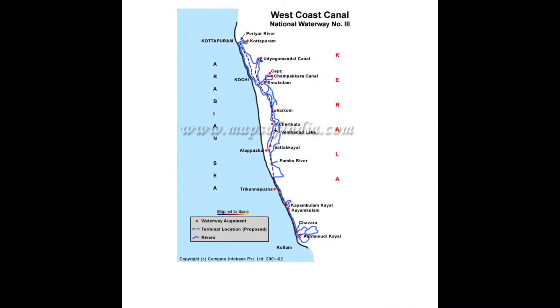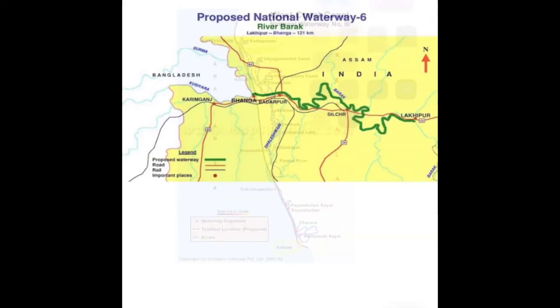National Waterway Number 3 is on the west coast canal, located in Kerala state, and runs from Kolam to Kottapuram.